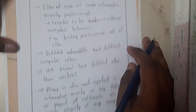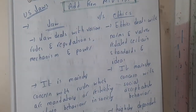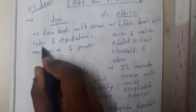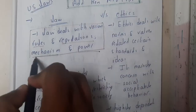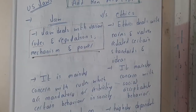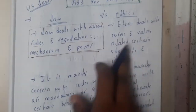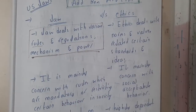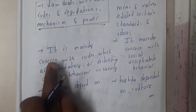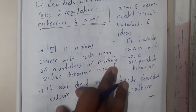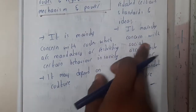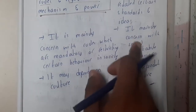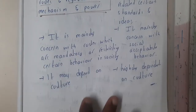Now let us look at the differences between laws and ethics, since this could be asked as a two-mark question. Laws deal with various rules, regulations, mechanisms, and power — they are standards that must be followed by everyone. Ethics deals with norms and values related to certain standards or ideas, based on your society. Laws are mainly concerned with rules that are mandatory or restrict certain behavior in society.